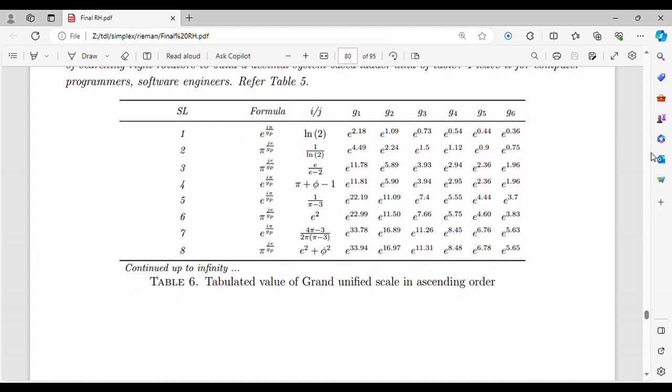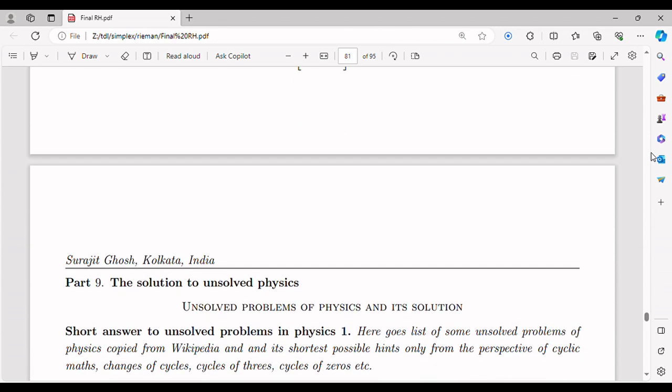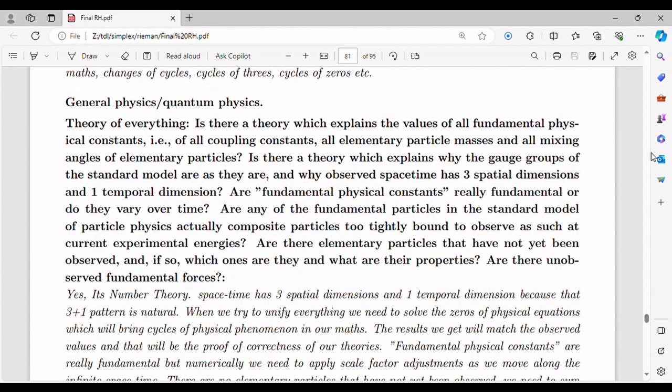It states that the number of primes less than a given value n is approximately n divided by the natural logarithm of n. However, despite this approximation of density, primes exhibit what appears to be a random distribution with irregular gaps between them. This irregularity is exemplified by prime gaps, which are the differences between consecutive primes.